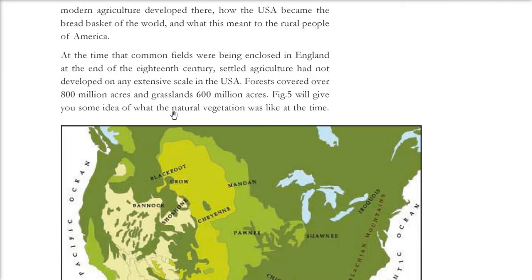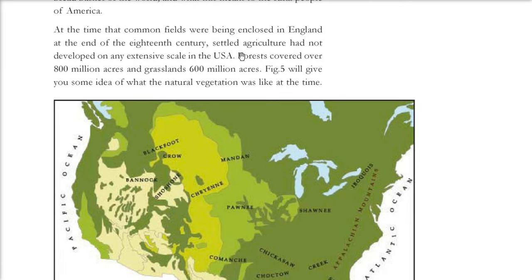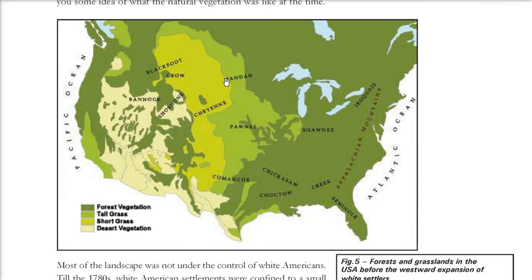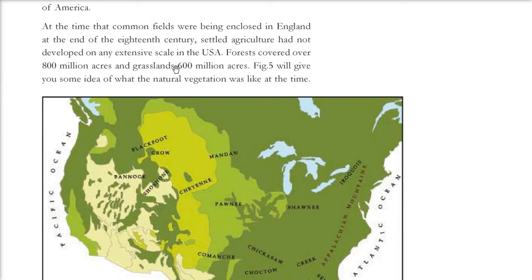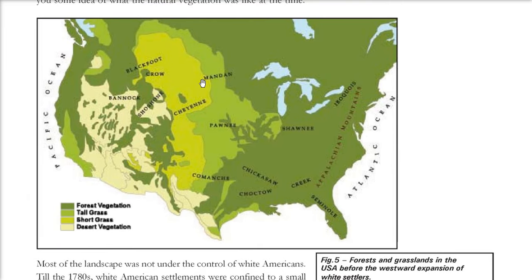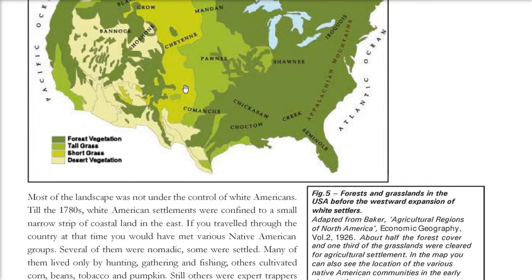What was this bread basket? To understand the situation, here is a thematic map showing that forests covered over 800 million acres and grasslands 600 million acres. This is the vegetation — forests and grasslands in USA before the westward expansion of white settlers. Previously, there were only natives living here, the native communities who used to inhabit this place.